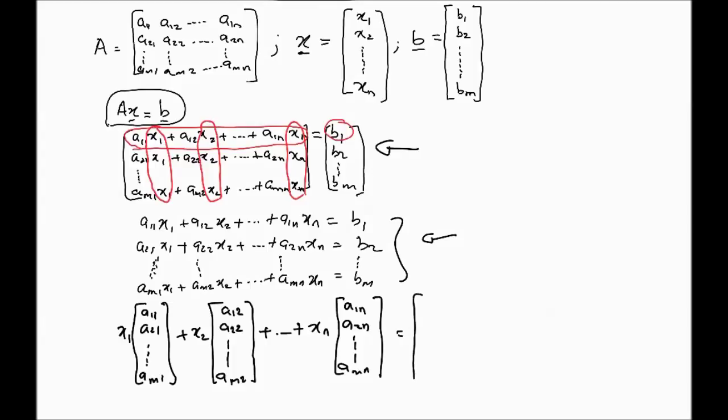But what I want you to notice is, this is a third way of representing a system of equations. Now, what we're saying is that the system of equations on the left-hand side is a linear combination of the coefficients of the matrix system. So yet another way of representing the same thing. So AX equals B can be also written in this form, using the idea of linear combination that we just looked at earlier.